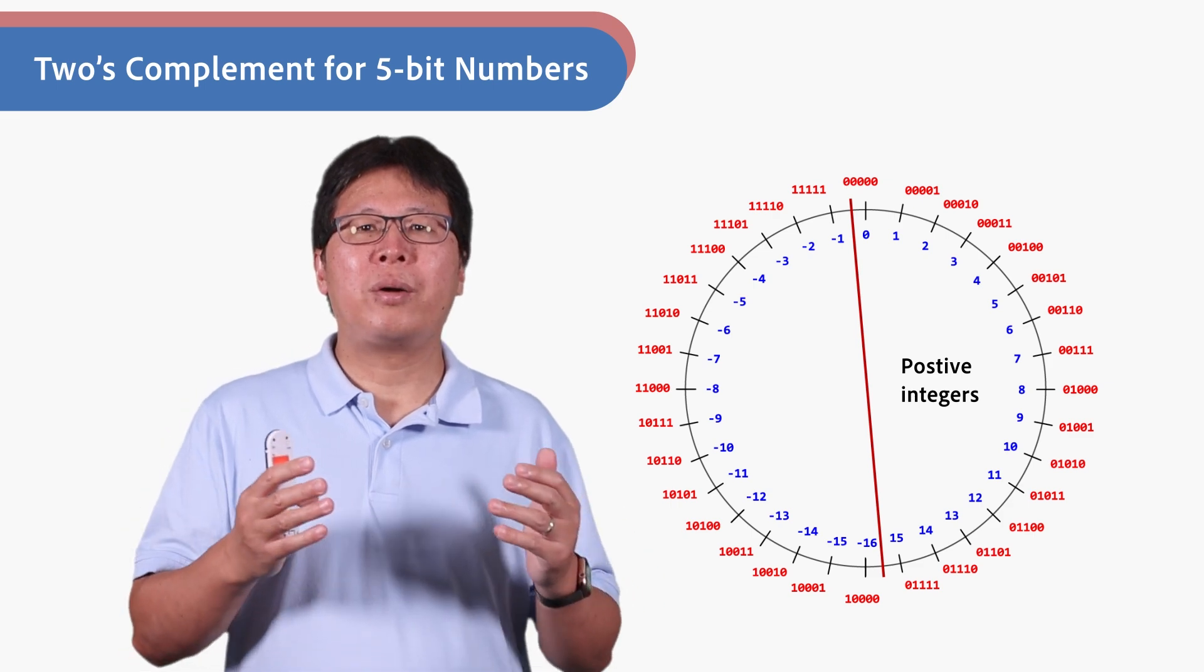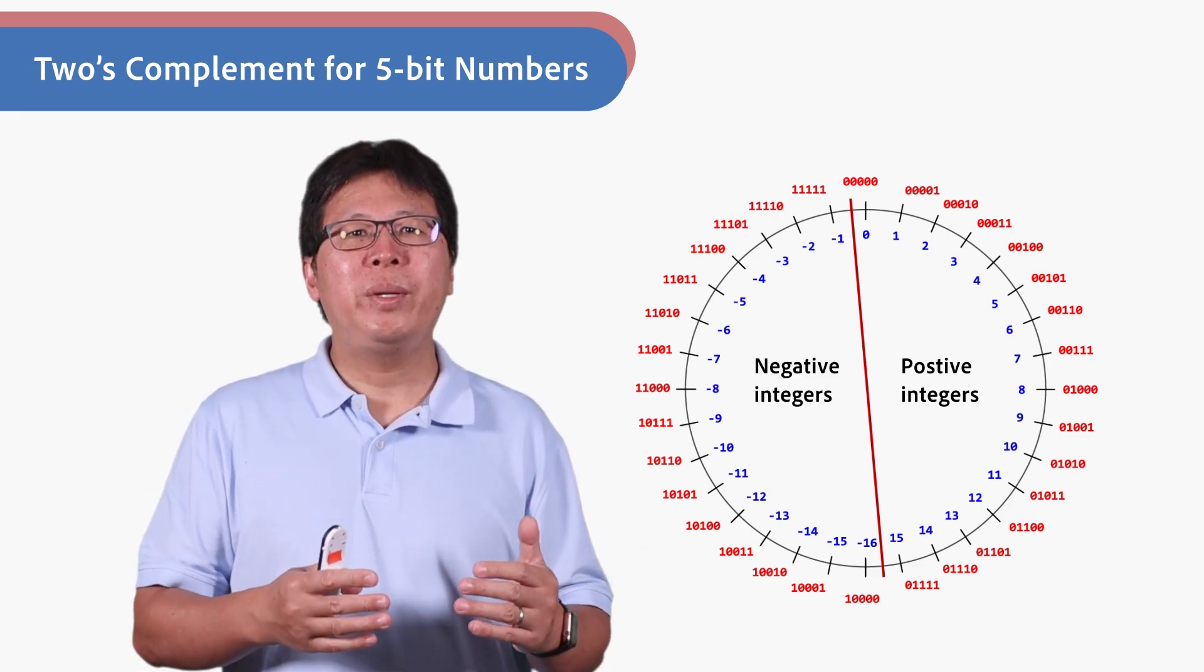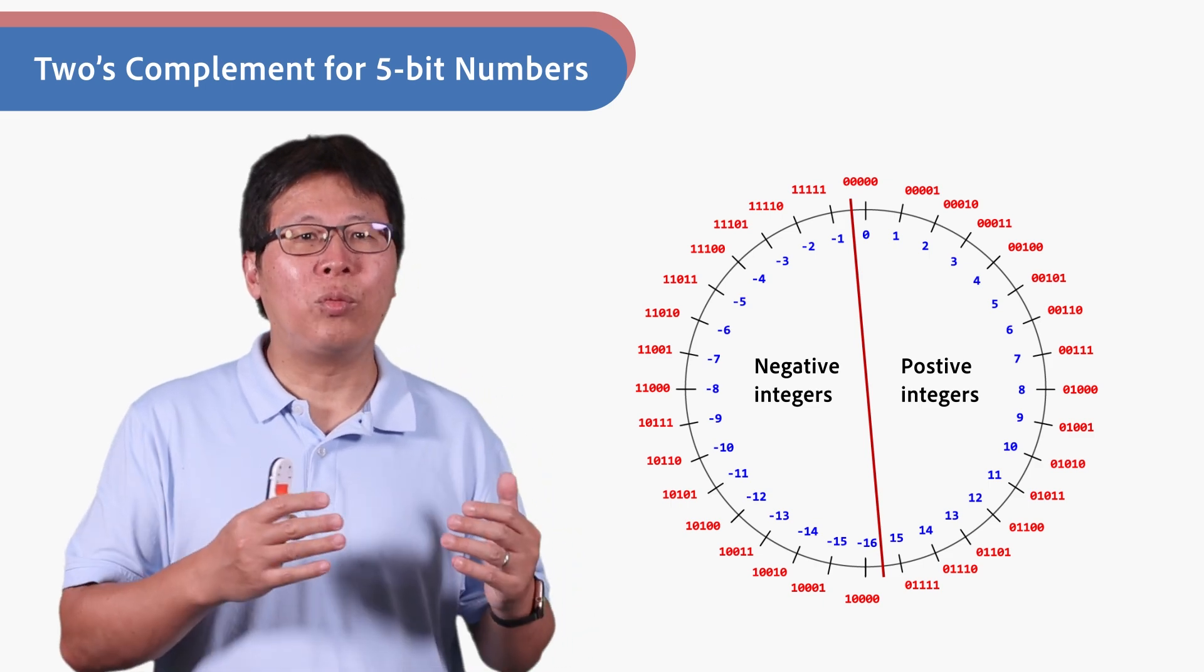Negative numbers are represented in this way: invert every bit of its positive equivalent, and then add 1.